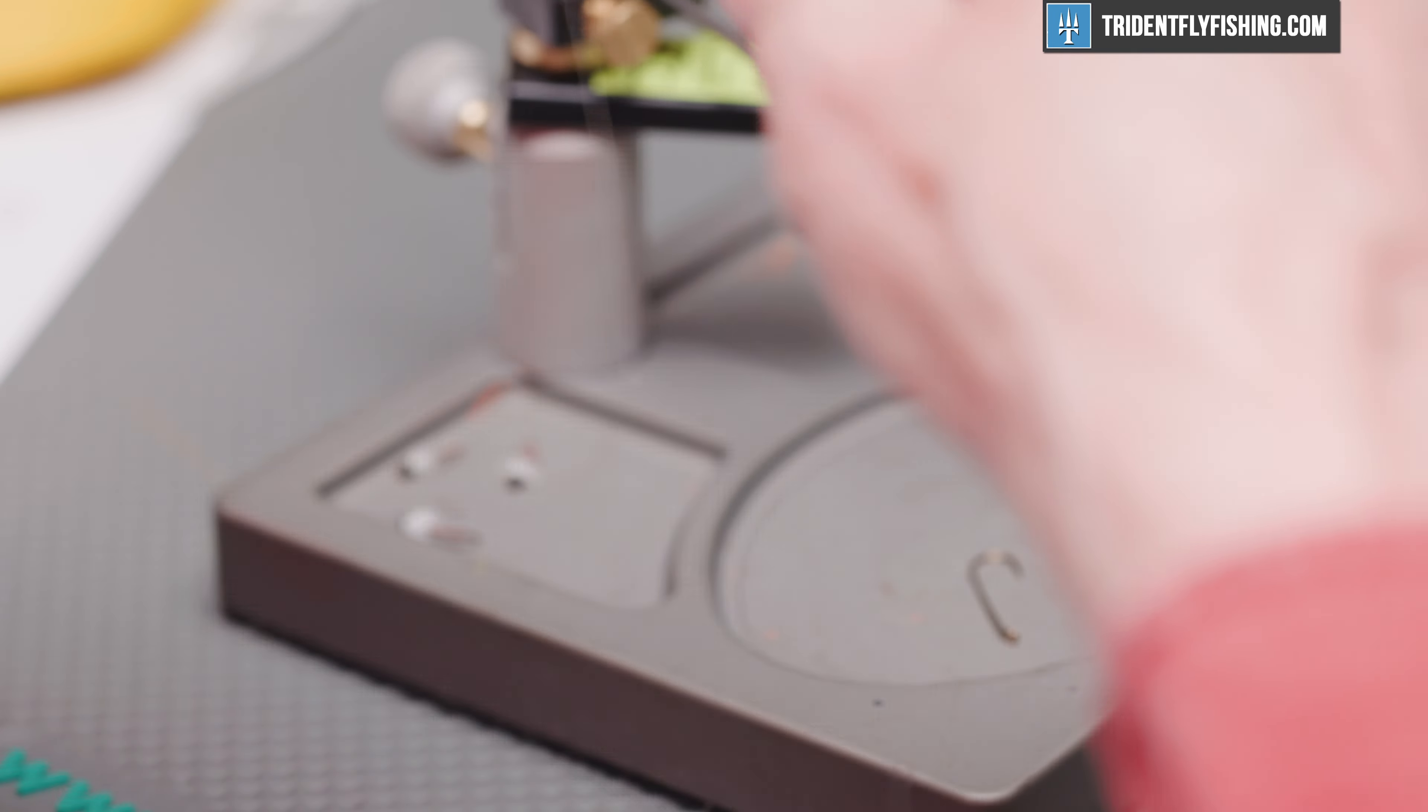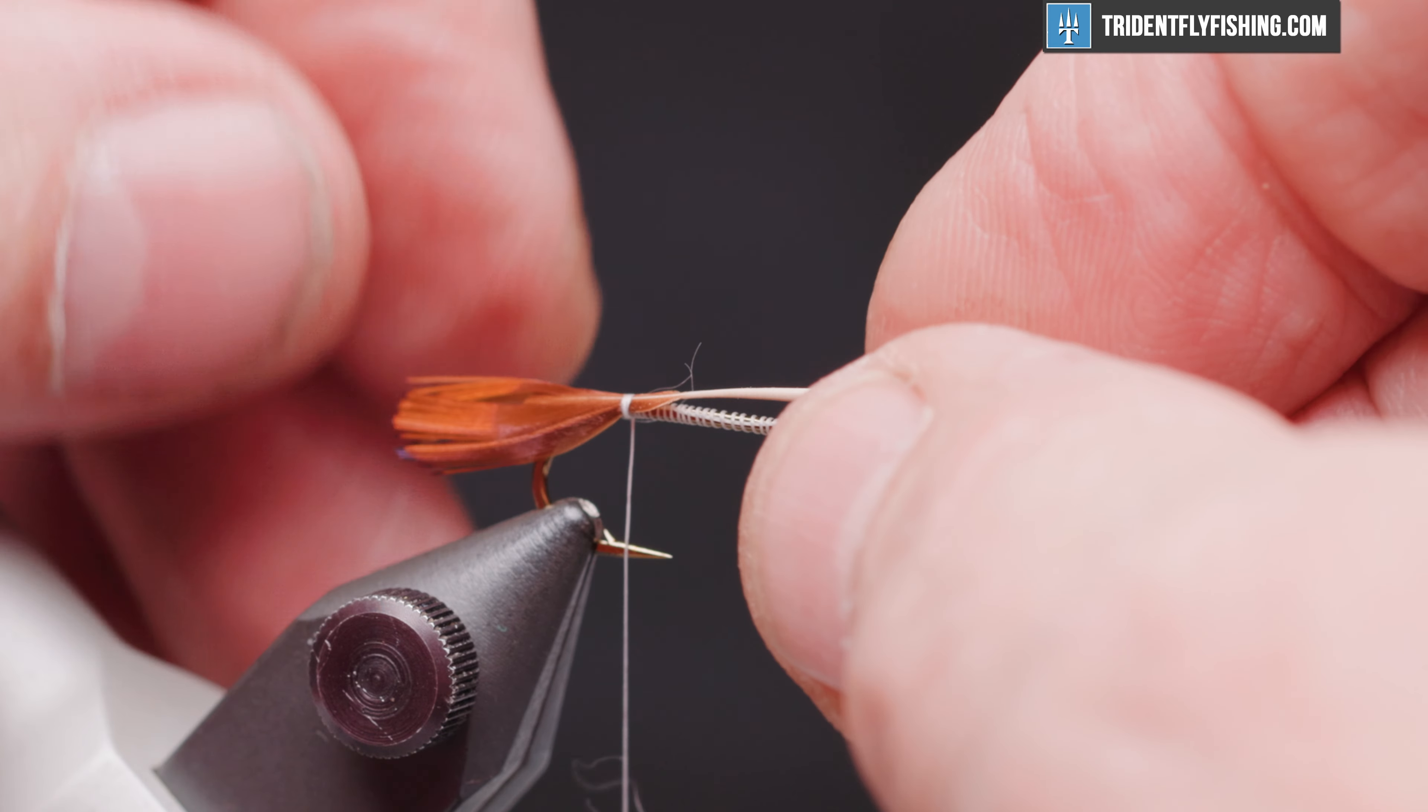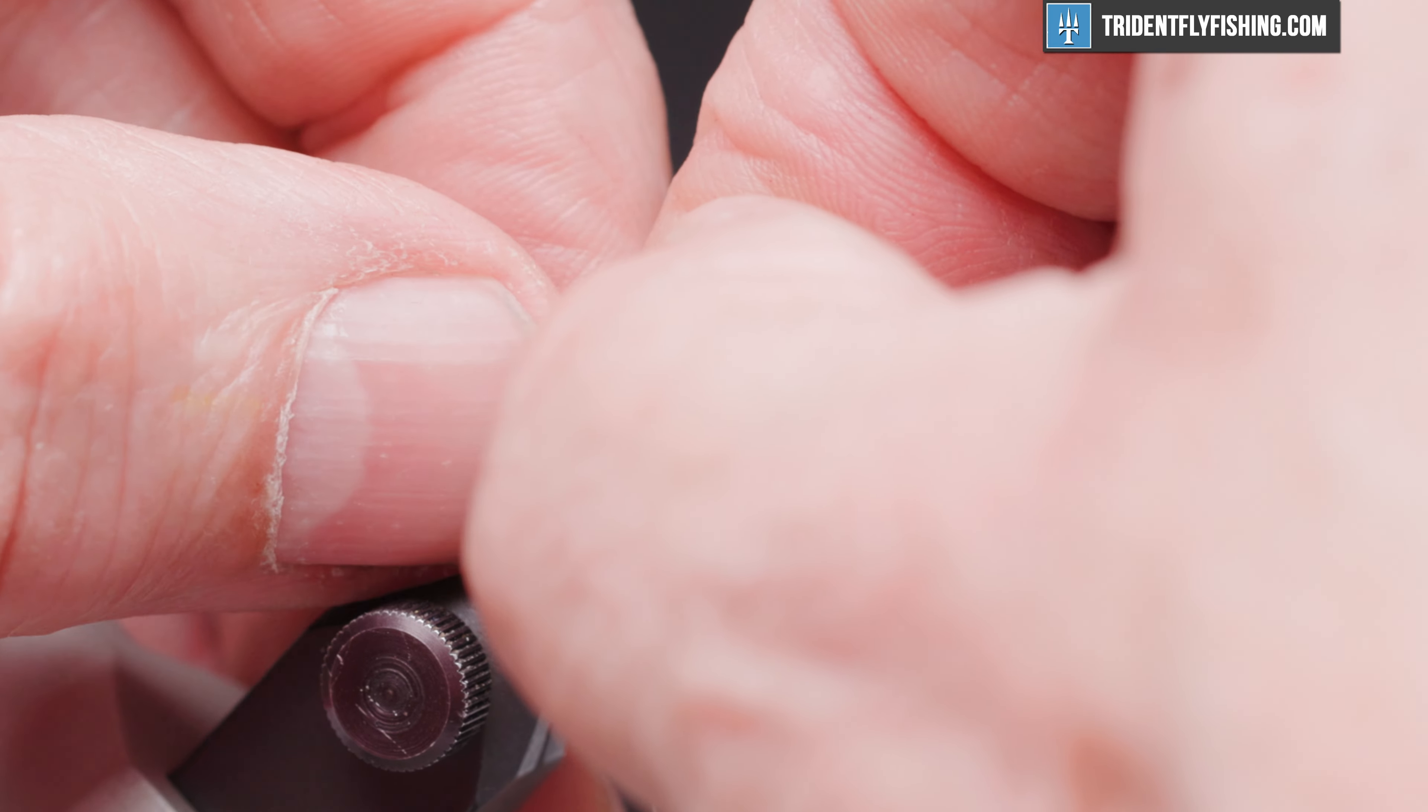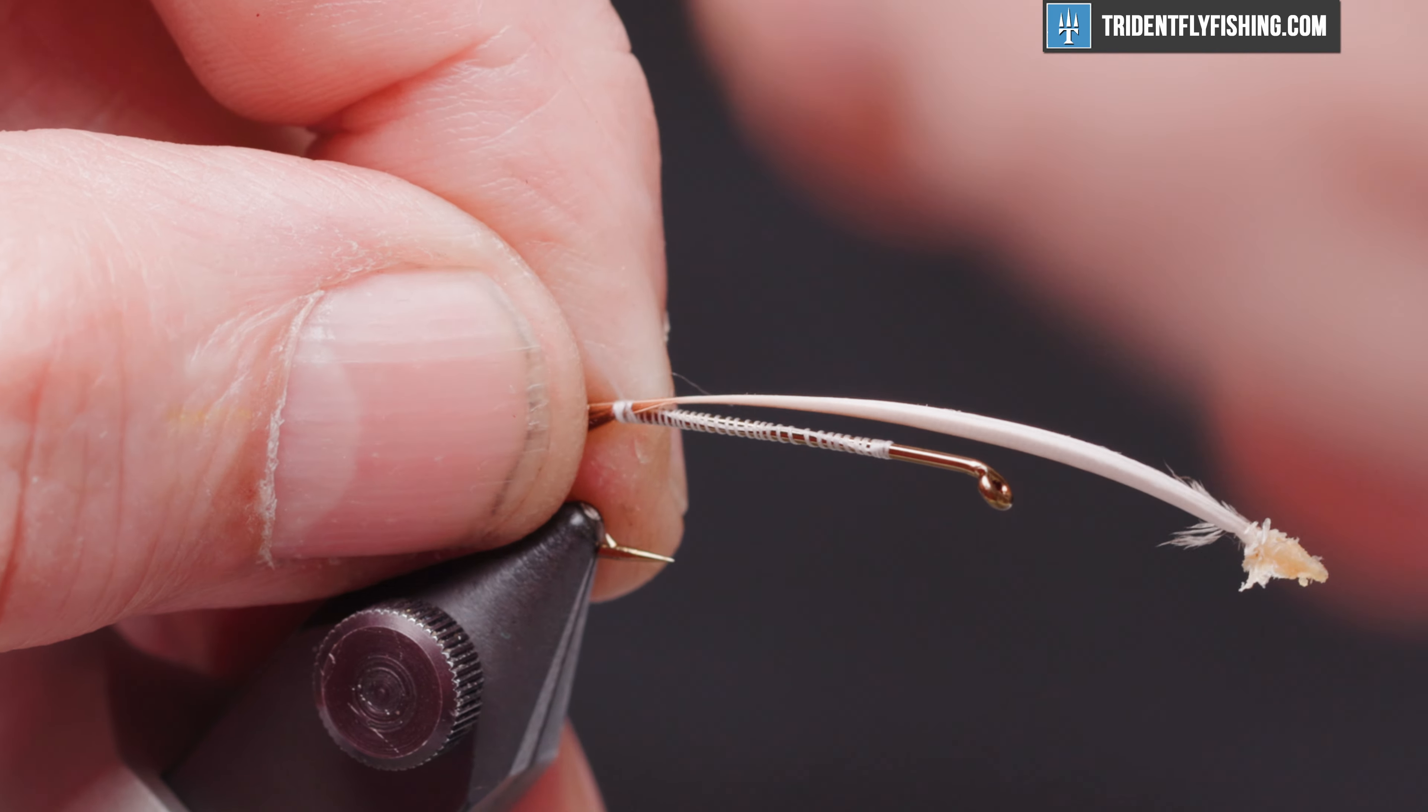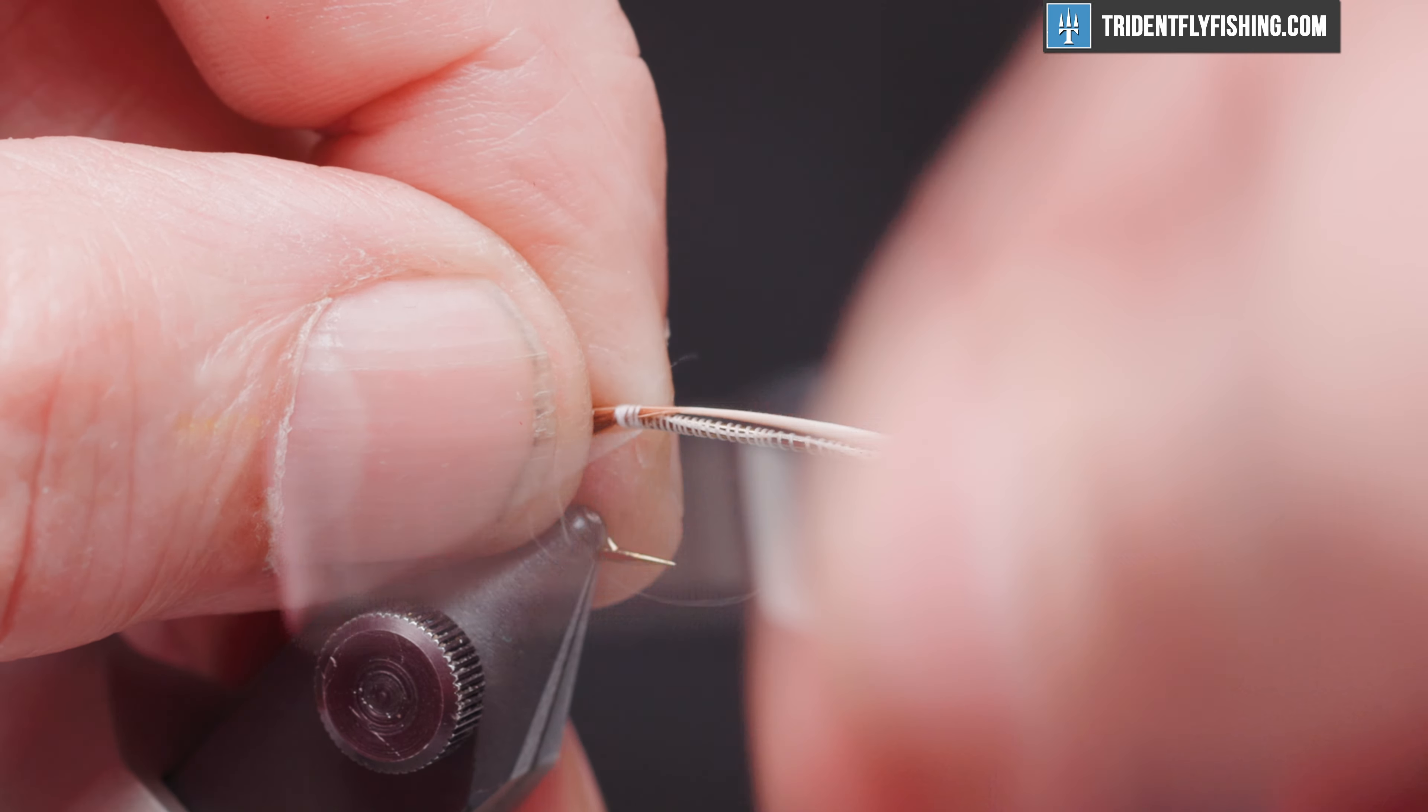So it looks like that. And we don't need all of this material so we'll pull some back. That looks about right. So it's going to be just a little bit longer than the gap of the hook. I'm going to tie that in on top. A little bit long. Pull that up. Looks pretty good.